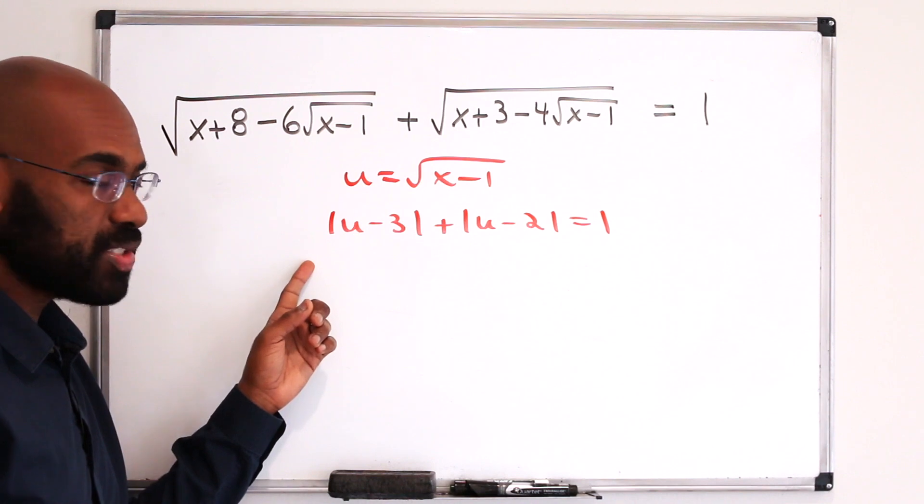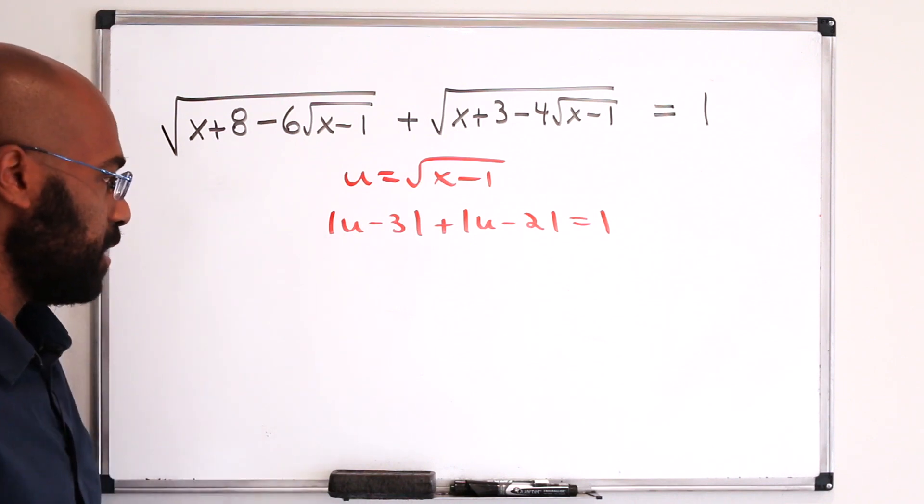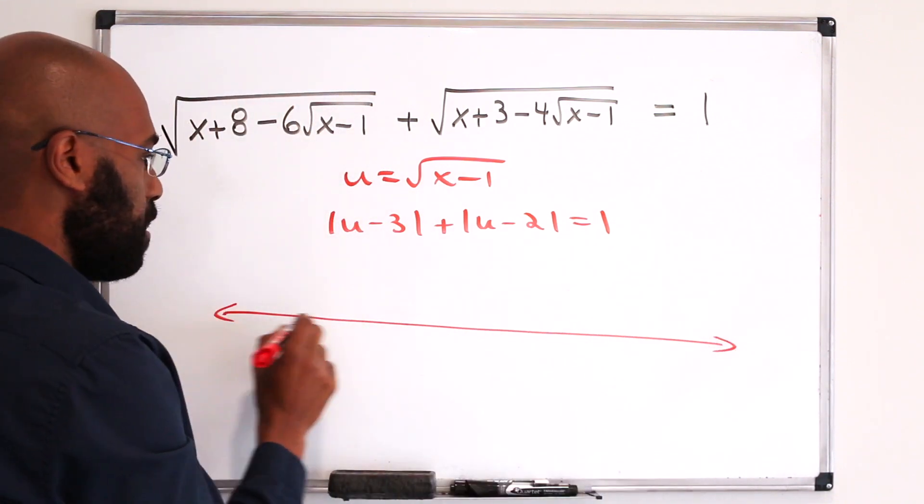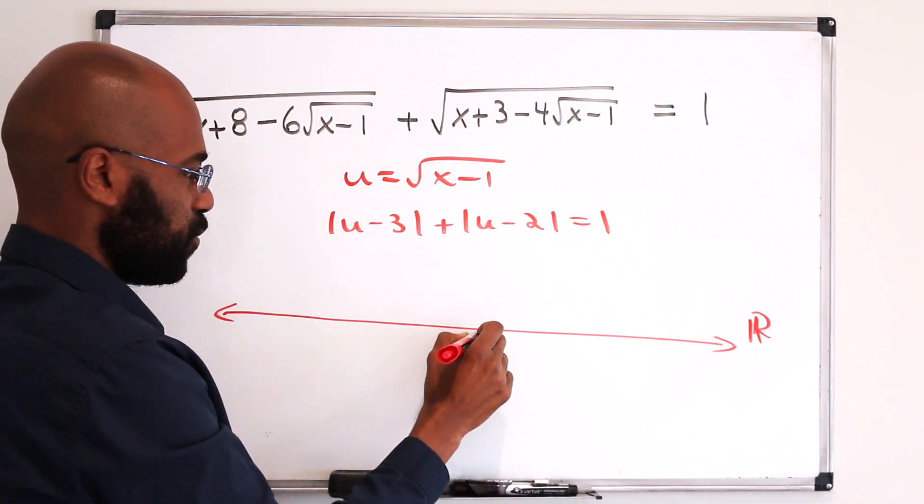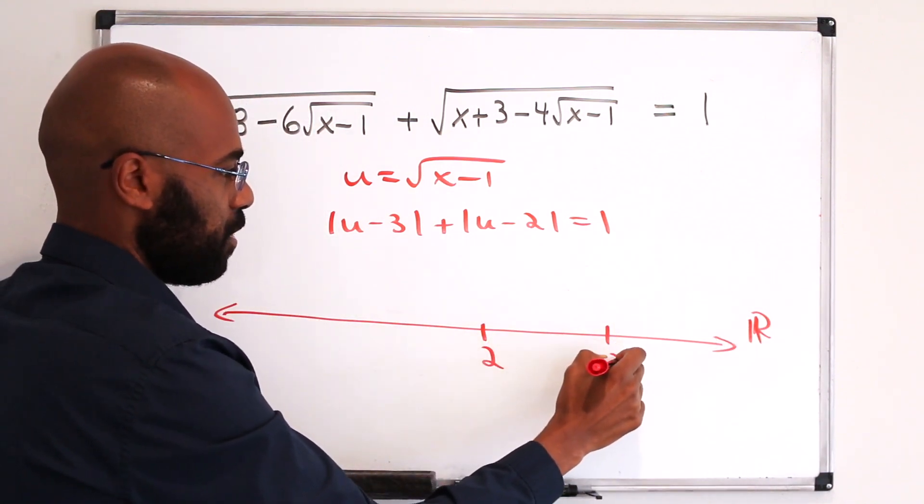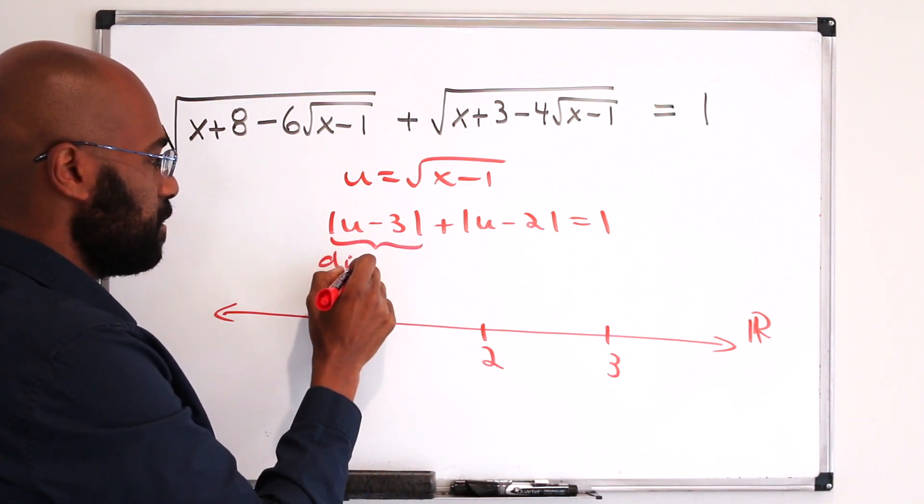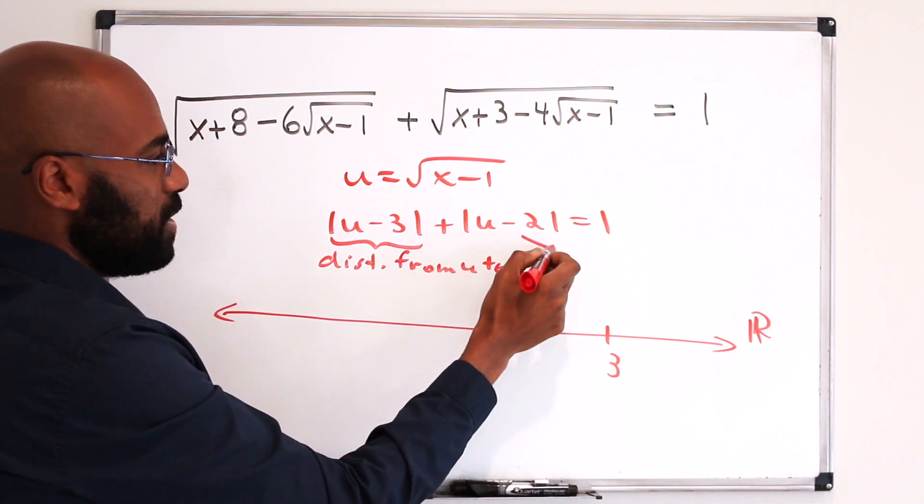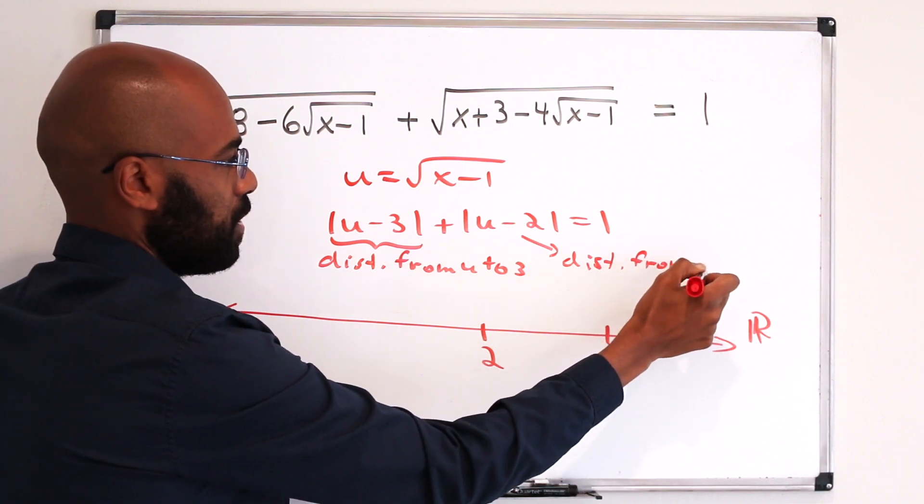To analyze this, I want to think about what the meaning of a statement like this is geometrically. So you have this value u, and it's sitting on the real line. Here are the points 2 and 3 somewhere along the real line. This here is the distance from u to the number 3. And similarly, this is the distance from u to 2.